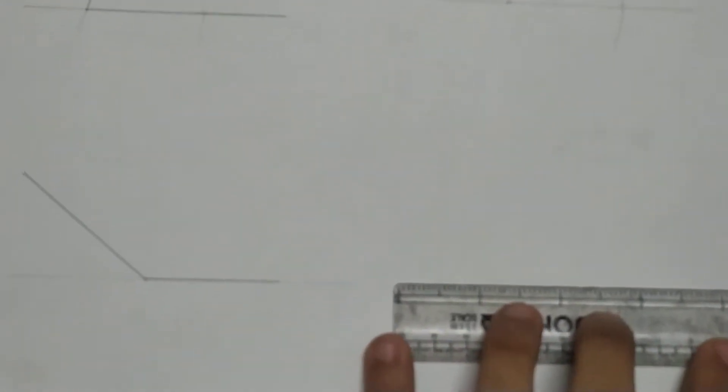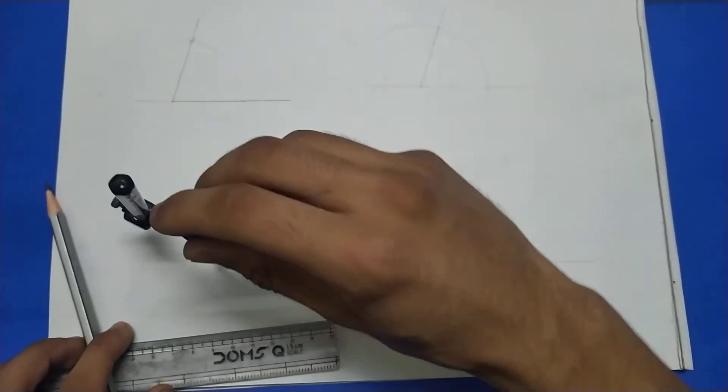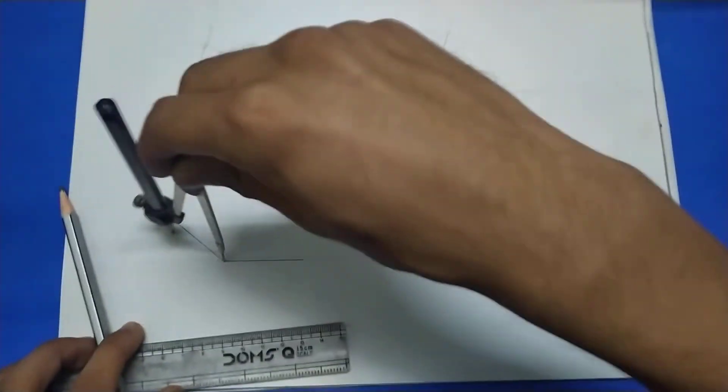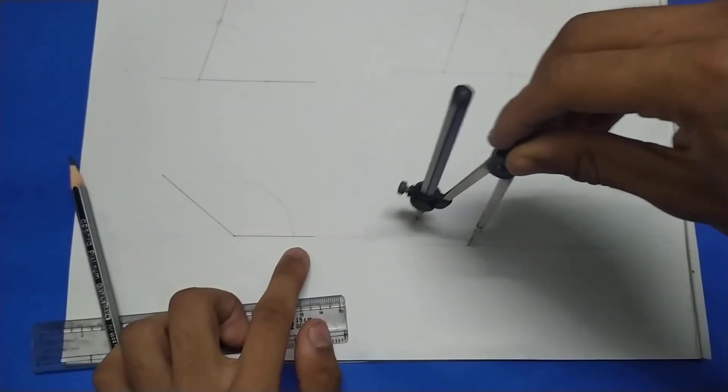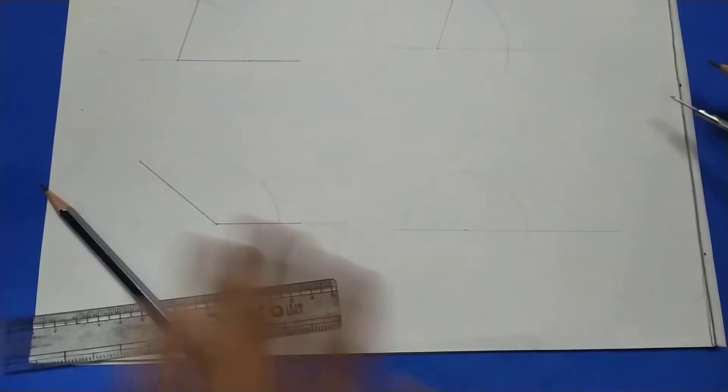Now, the procedure for obtuse angles is the same. I will do this one quicker. You first start off with this baseline, mark any point, open a compass to any length such that it intersects two points on this angle. Using the same length, draw an angle which is greater than this one so that it will intersect.